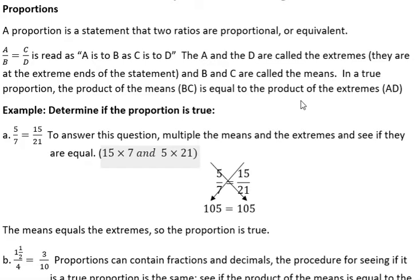In a true proportion, the product of the means, which is B times C, is equal to the product of the extremes, which is A times D. So we can determine if a proportion is actually true or not by multiplying the means and the extremes and seeing if they are equal.